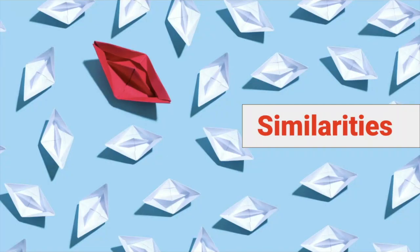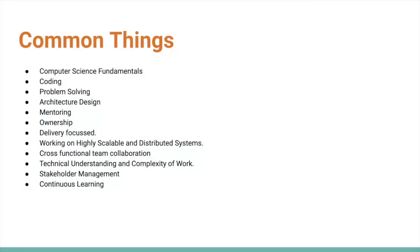Looking at the common points across all these job descriptions: number one is strong computer science fundamentals; coding in any programming language such as C, C++, or Java; problem solving; architecture and design; mentoring — as a senior engineer, how do you mentor your peers, do design reviews and code reviews; ownership, taking additional responsibilities; delivery focus; working on highly scalable and distributed systems; cross-functional team collaboration; technical understanding and complexity of work; stakeholder management; and continuous learning.